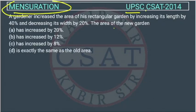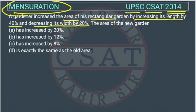This is a mensuration question asked by UPSC in CSET paper of 2014. A gardener increased the area of his rectangular garden by increasing its length by 40 percent and decreasing its width by 20 percent.